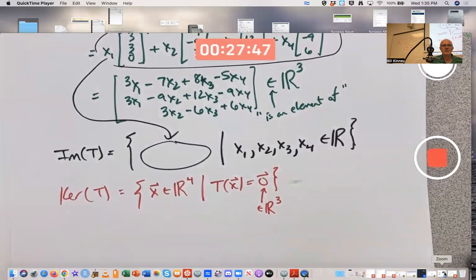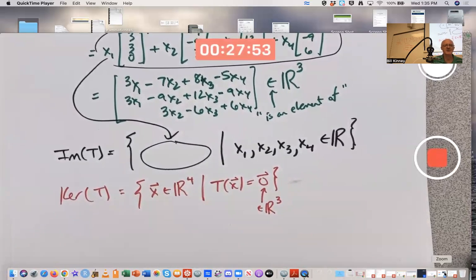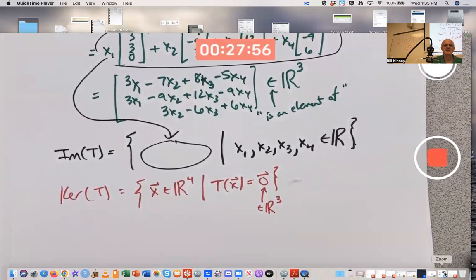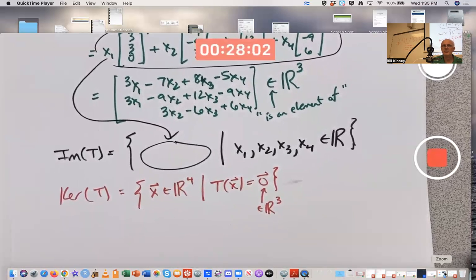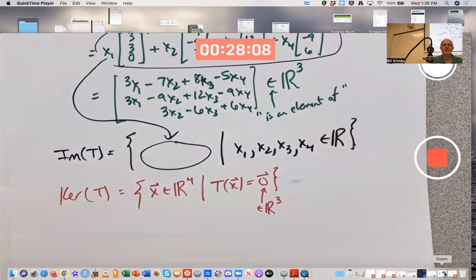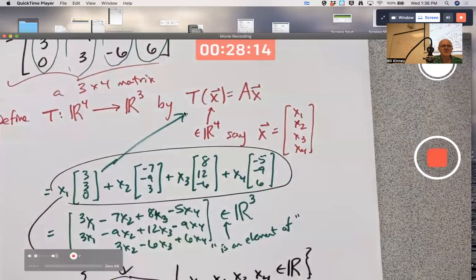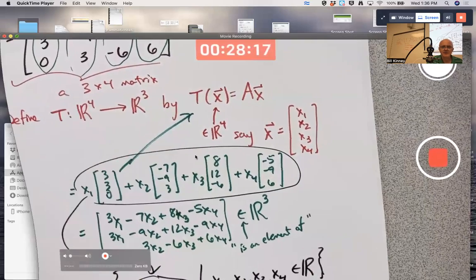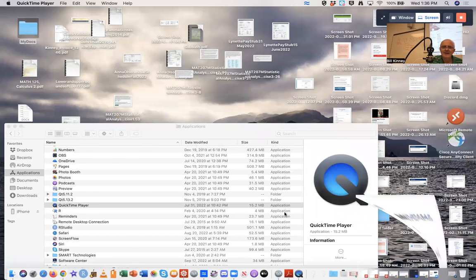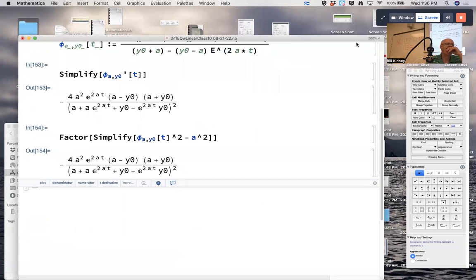But how do you describe the kernel more specifically? That's where you need row operations to get to something called reduced row echelon form, identifying free variables, and solving. There was a lecture 8b which you probably should have watched as you were working on the take-home, with a three-by-three example, I believe.